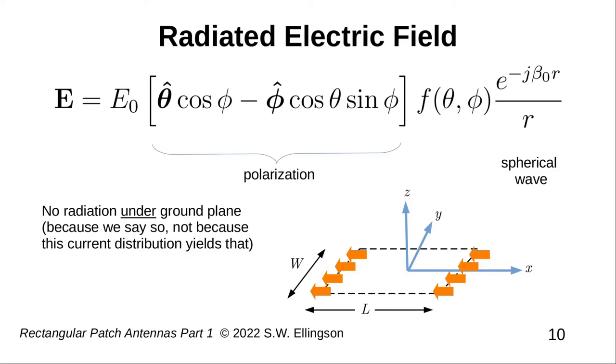Next, we have a vector which corresponds to the polarization of the field. Third, we have a factor, F theta phi, which, together with the preceding factor, describes the pattern, and I'll come back to that in a moment.